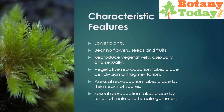Characteristic features of cryptogami: these are lower plants and bear no flowers, seeds, and fruits. These reproduce vegetatively, asexually, and sexually. Vegetative reproduction takes place by cell division or fragmentation, while asexual reproduction takes place by means of spores. Sexual reproduction takes place by fusion of male and female gametes.